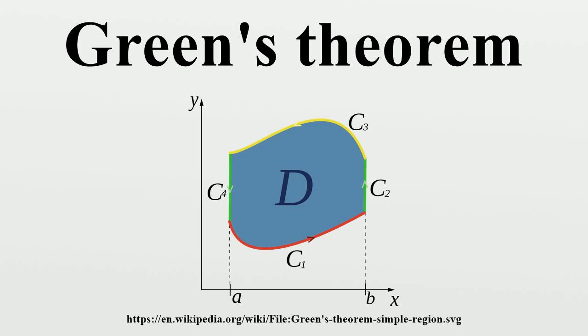Proof when D is a simple region. The following is a proof of half of the theorem for the simplified area D, a type 1 region where C1 and C3 are curves connected by vertical lines. A similar proof exists for the other half of the theorem when D is a type 2 region where C2 and C4 are curves connected by horizontal lines.